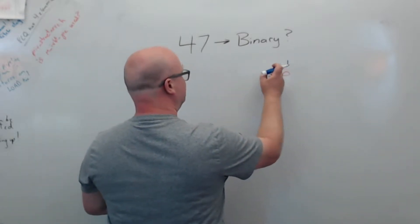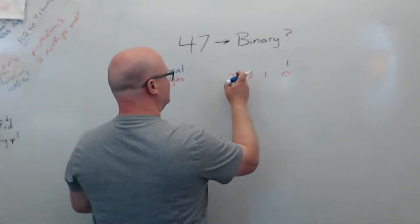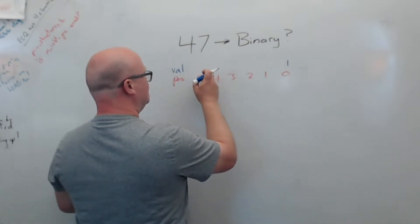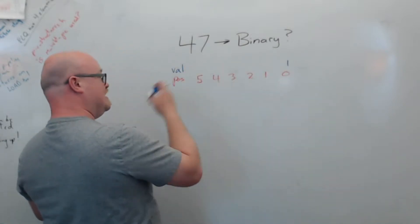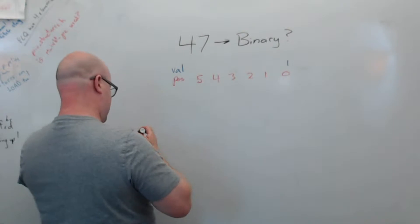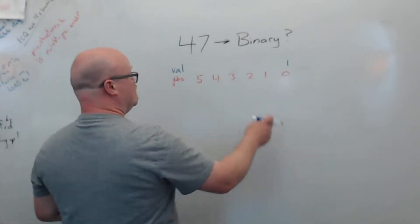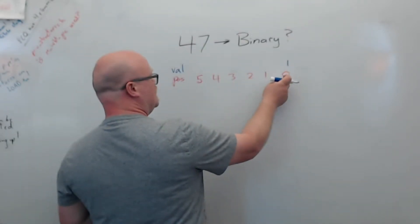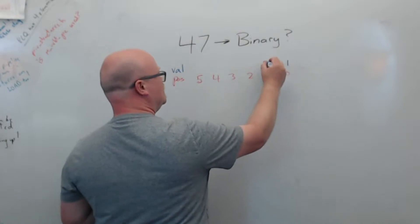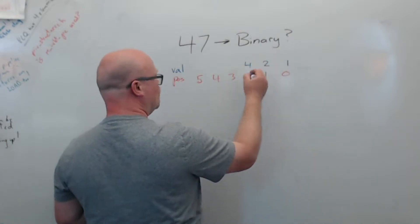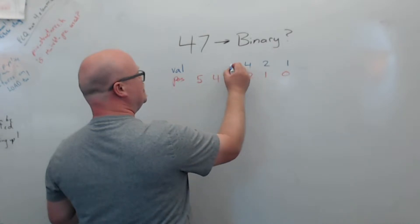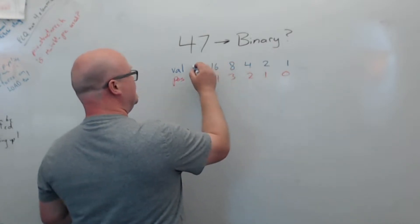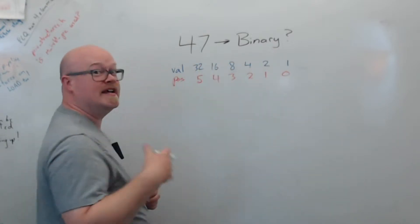So we have position 0, 1, 2, 3, 4, 5, etc. And the values for those is 2 to the 0, which is 1, 2 to the 1, which is 2, 2 to the second power, which is 4, and then just keep multiplying by 2. 8, 16, 32, and so on.